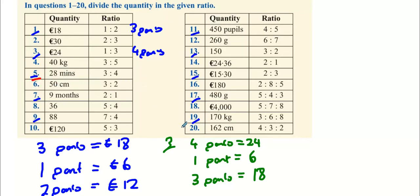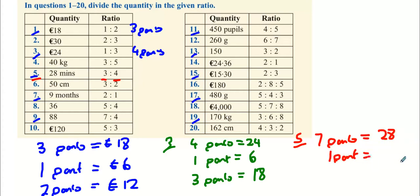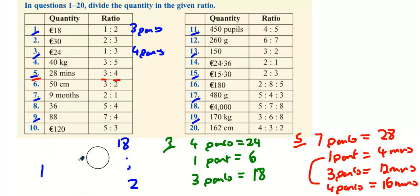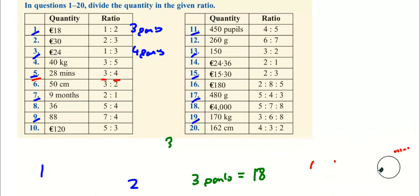Now we're on to question five. Three plus four is seven parts, so seven parts equals 28. This implies that one part — divide both sides by seven — equals four minutes. Then you need to find out what three parts are: three parts means multiply four by three to get 12 minutes. And then four parts is four times four, which gives you 16 minutes.